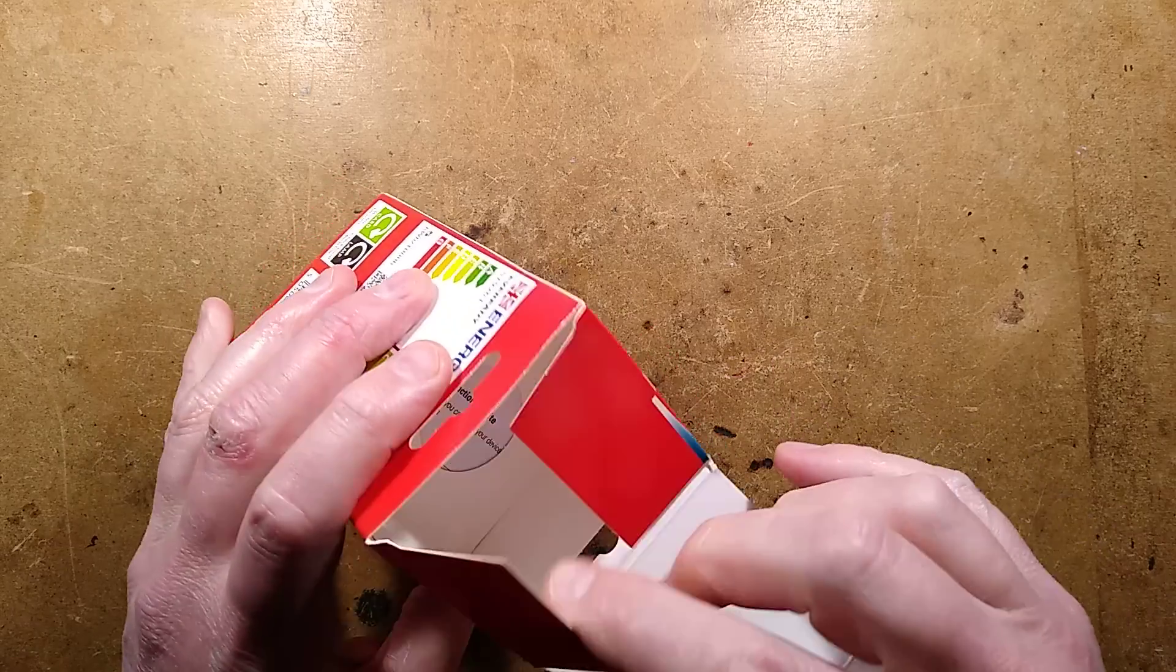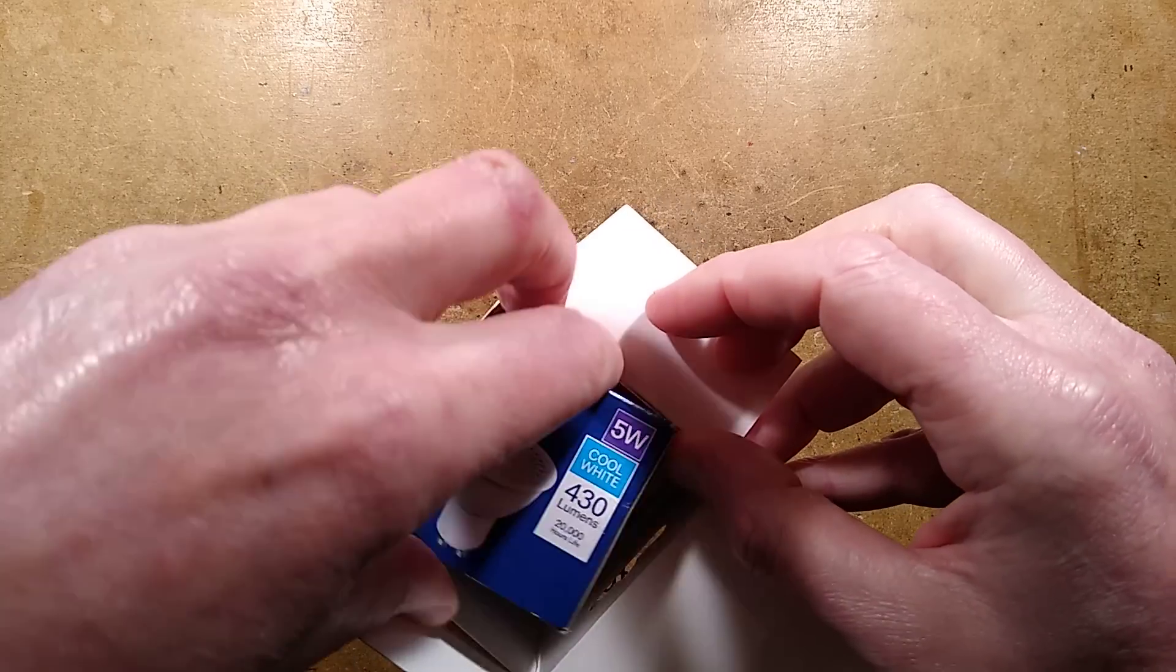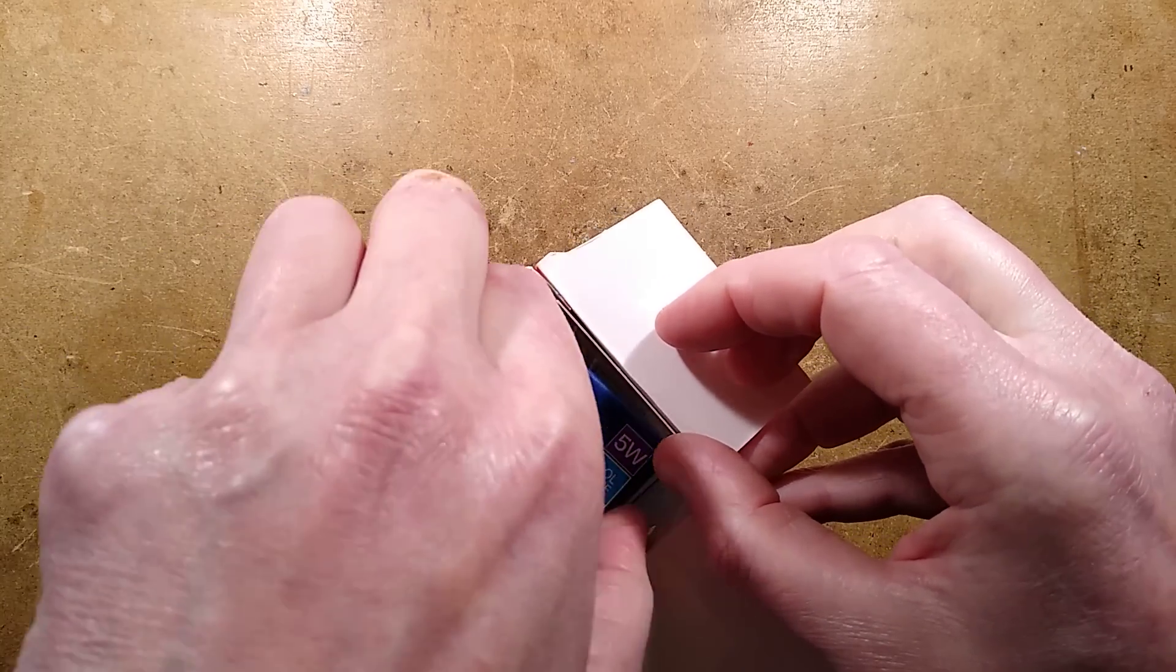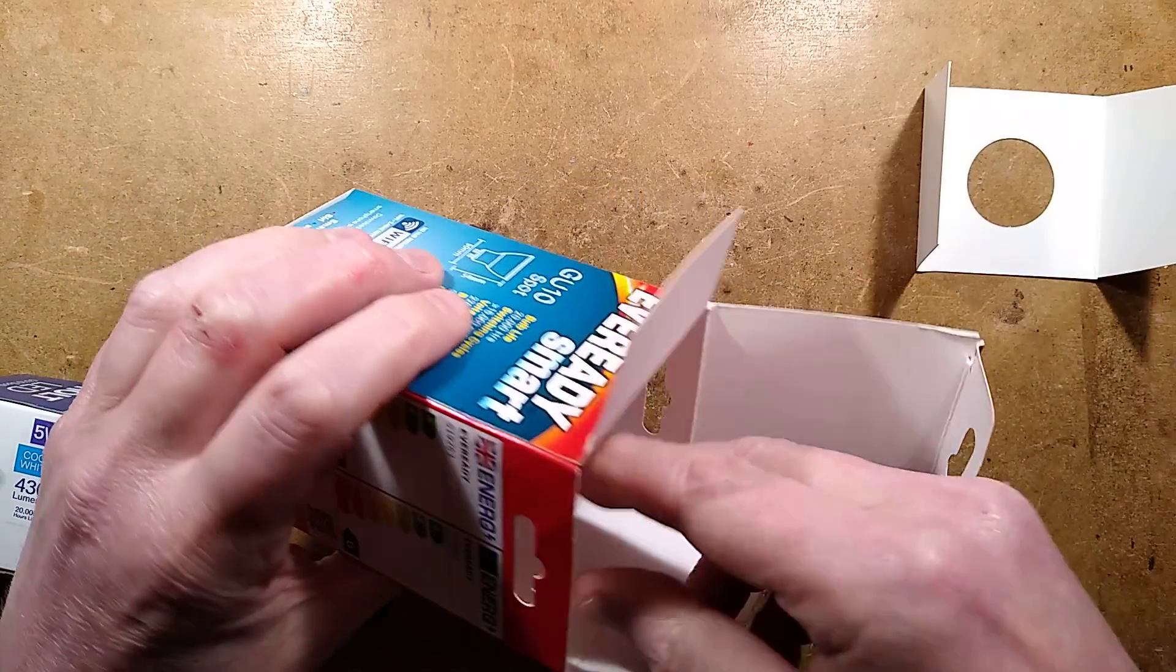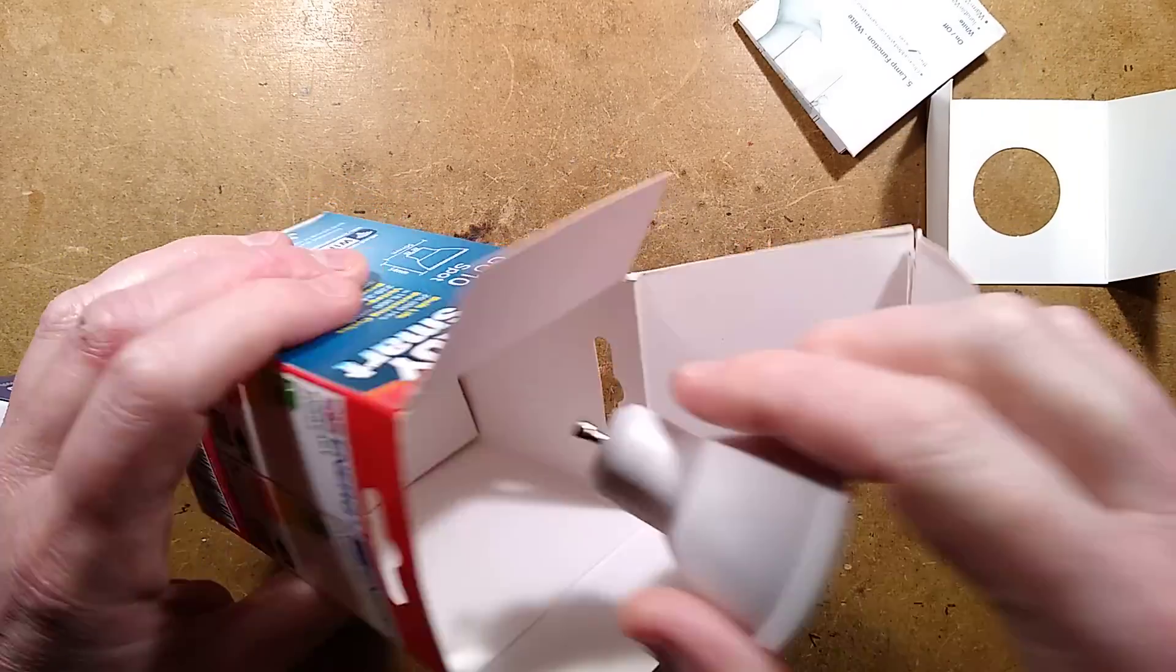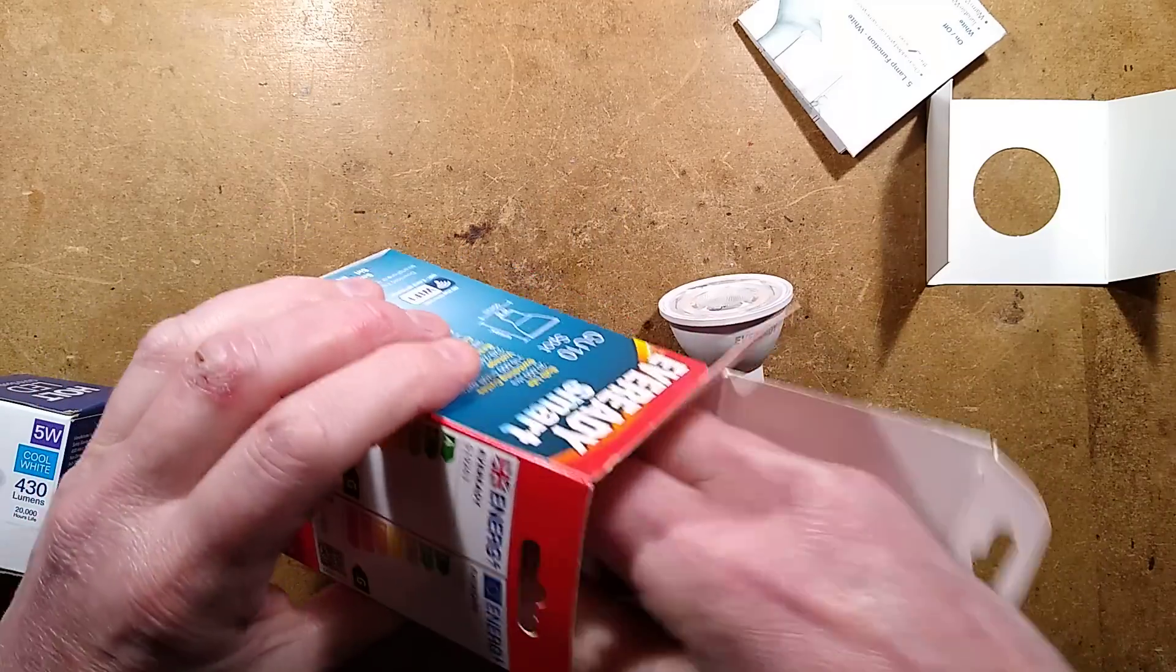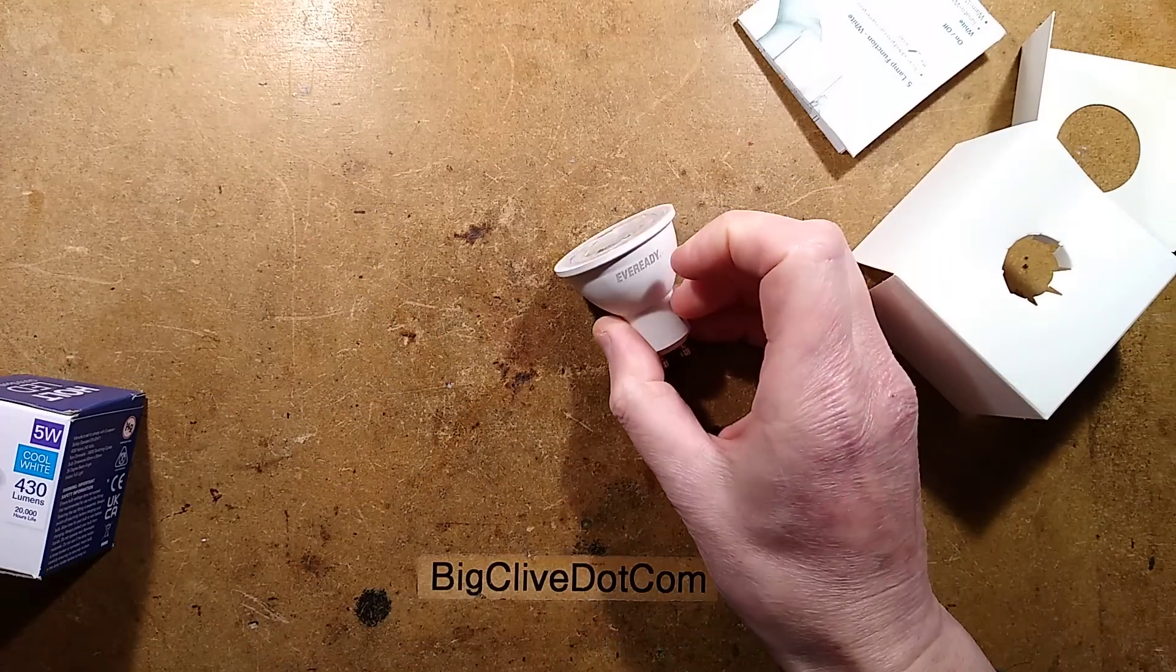The box contains a surprising amount of air. You could actually stuff another lamp in the air section. It came from Poundland but didn't cost a pound unfortunately. Lots and lots of packaging, that is ridiculous. It is just a little GU10 lamp.